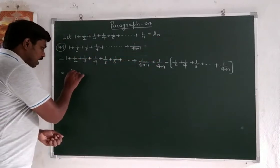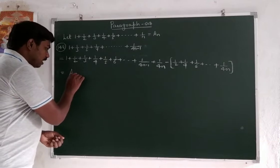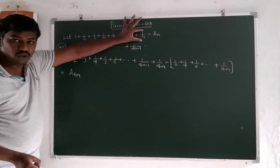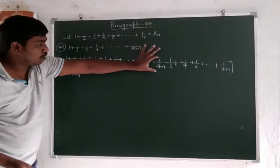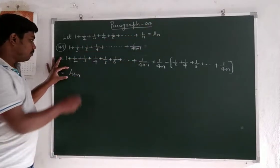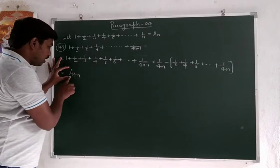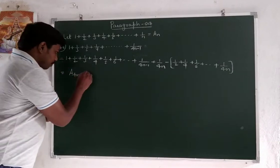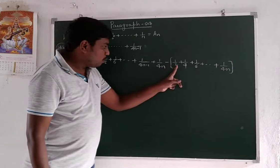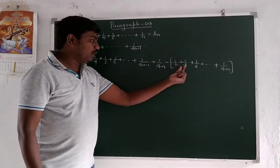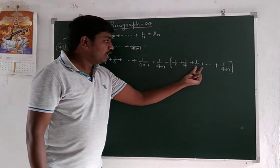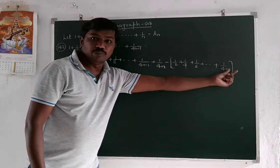So a₄ₙ. The last term is 1 over n. Sum of these terms is a₄ₙ. Now 1 by 2 is common again — 1 by 2 into 1 by 2, 1 by 2 into 1 by 3, next 1 by 2 into 1 by 2n. 1 by 2 is common again.